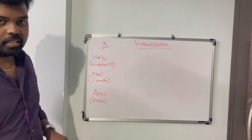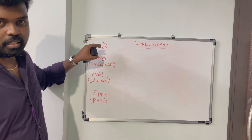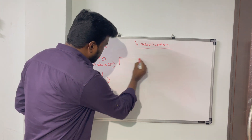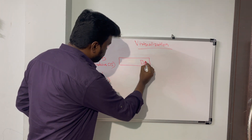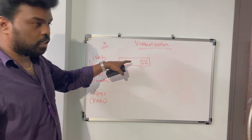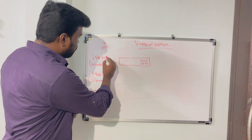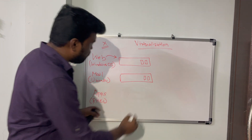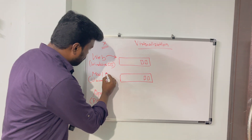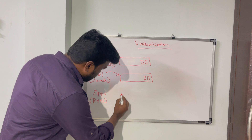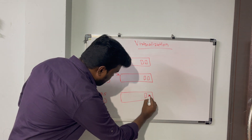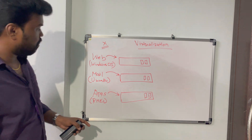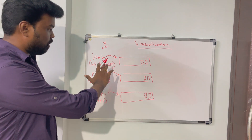Now we have three different sets of applications for the organization. These applications have to run on servers, so the organization has to purchase hardware. They purchased one hardware and installed Windows on it to deploy the web application. There is one more hardware with Ubuntu, so they can install the mail server. And another physical hardware with RHEL installed, so they can deploy the Apps.